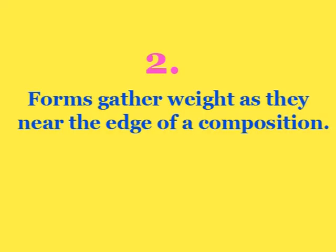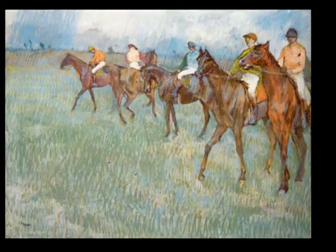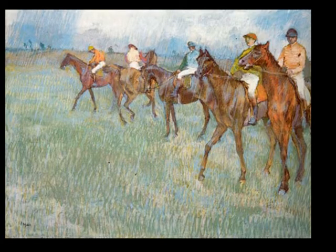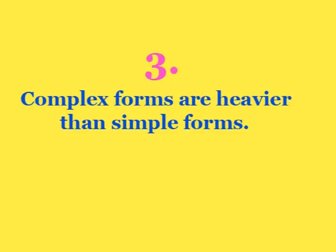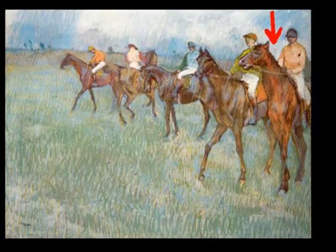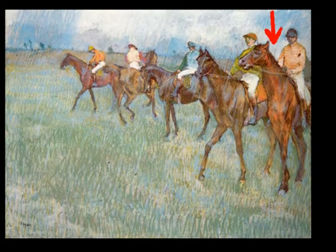Secondly, forms gather weight as they near the edge of a composition. When a form is pushed toward the edge of a composition, it pulls our eyes like an anvil off the edge of a cliff. Thirdly, complex forms are heavier than simple forms. When a form has more detail or definition, it commands our attention over a form with less complexity.